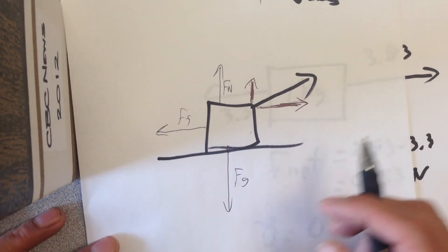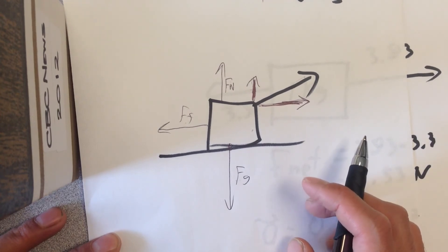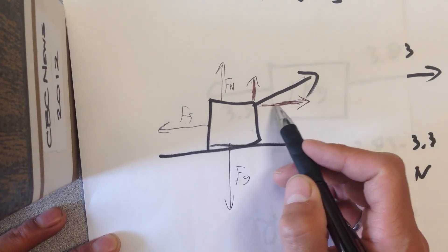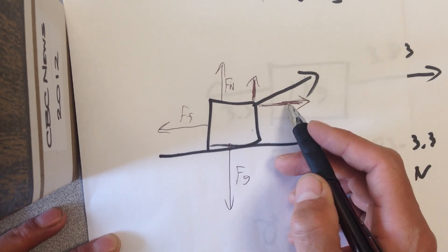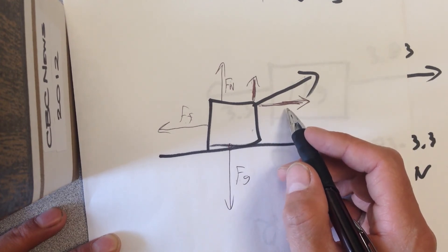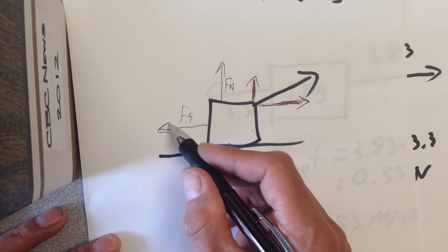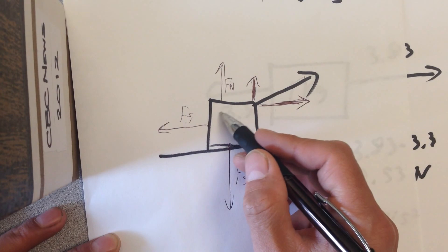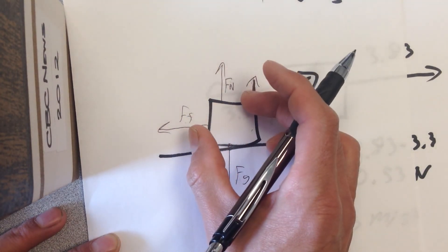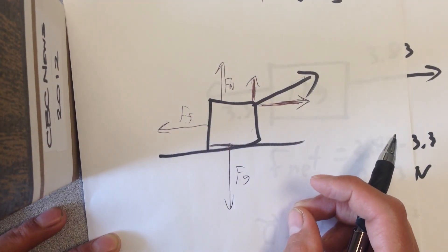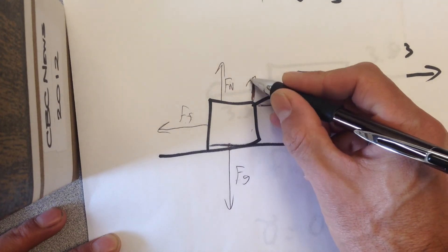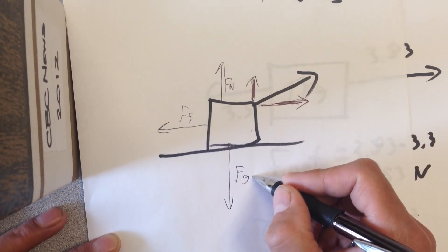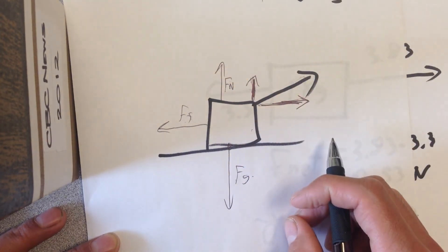A couple of other variations: if the force of friction turned out to be greater than the parallel component of the applied force, friction would naturally reduce itself to match and the block would not accelerate — it would stay still. Another variation: if the vertical component of the applied force were greater than gravity, the block would be lifted into the air.